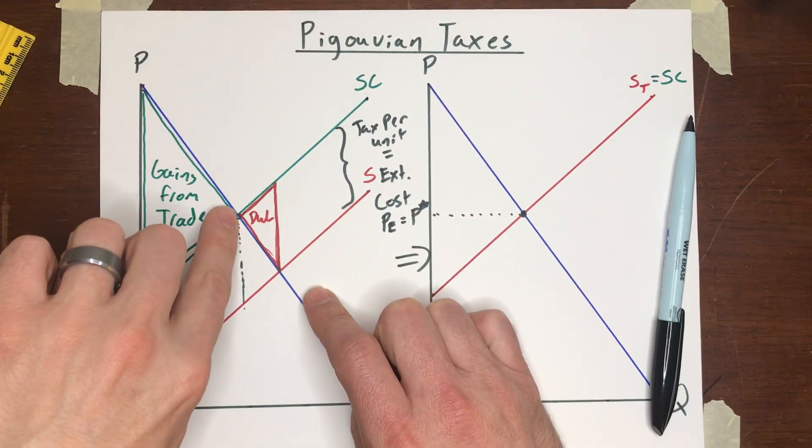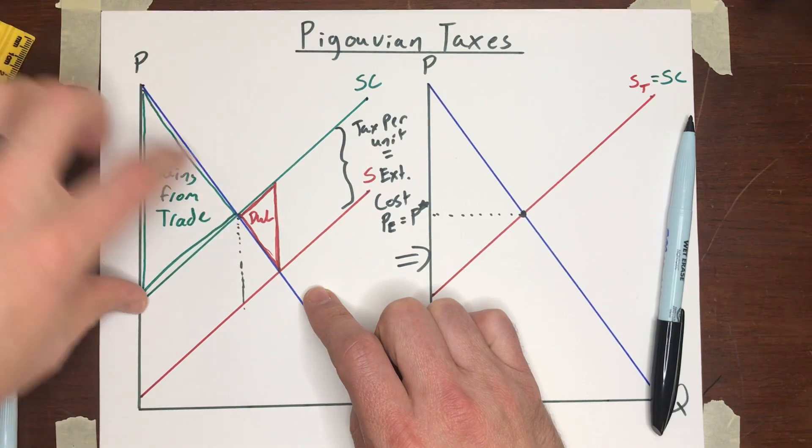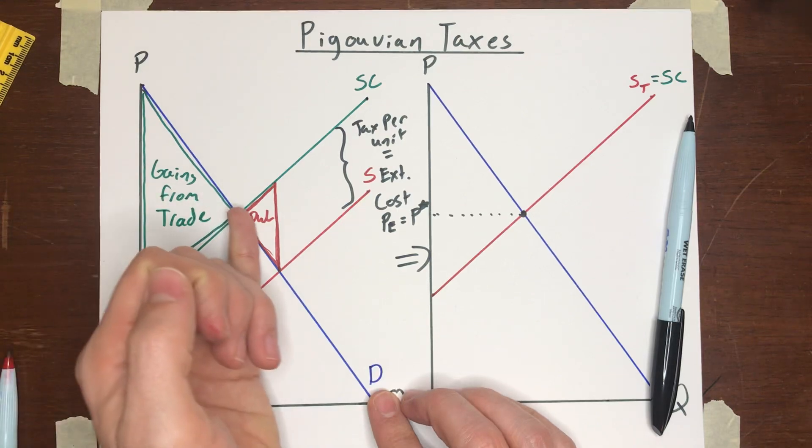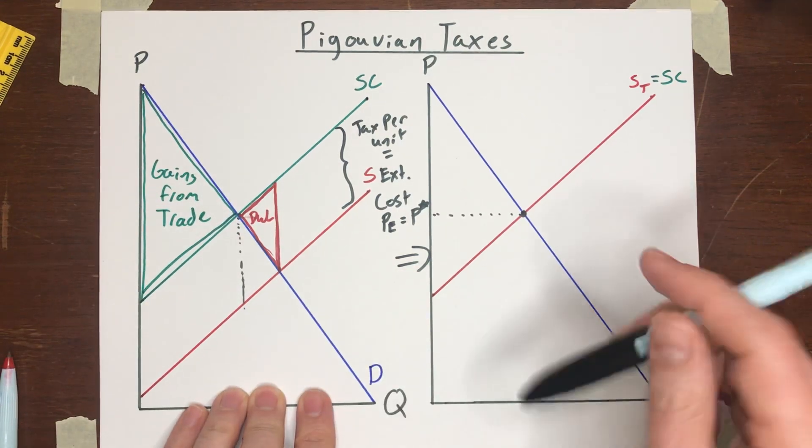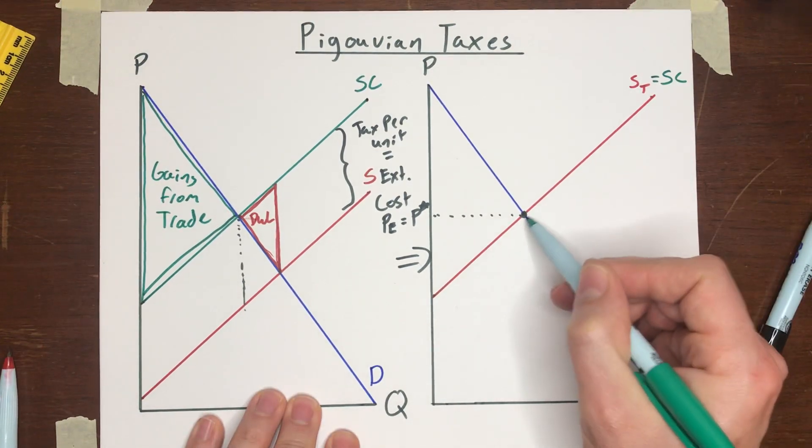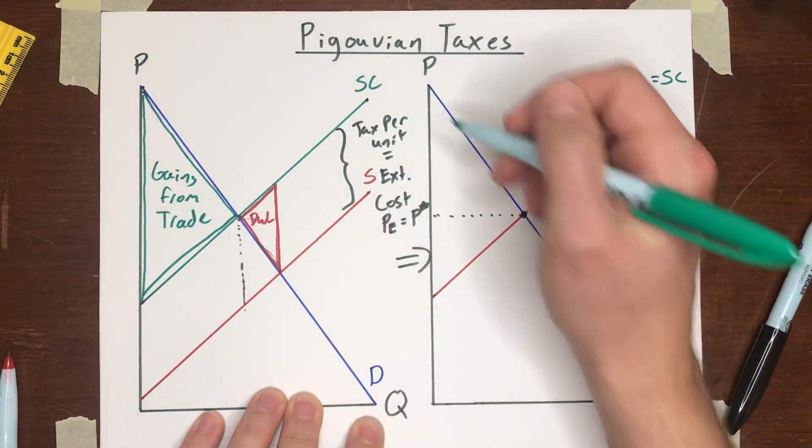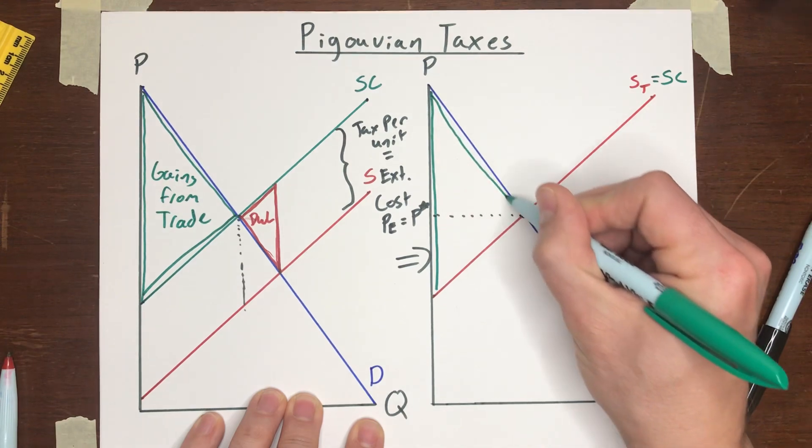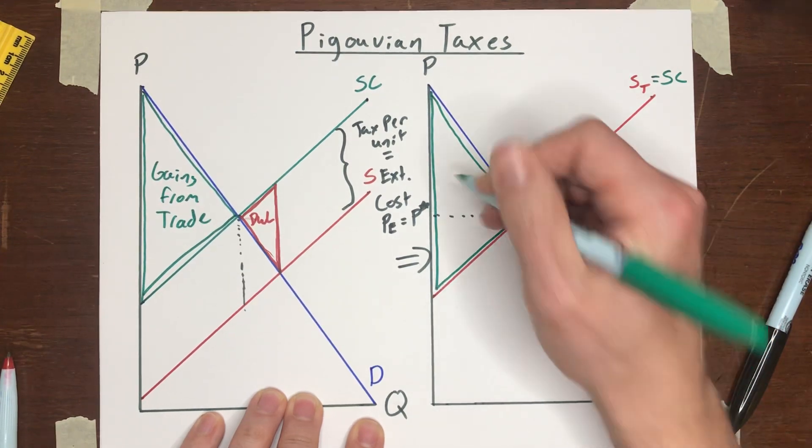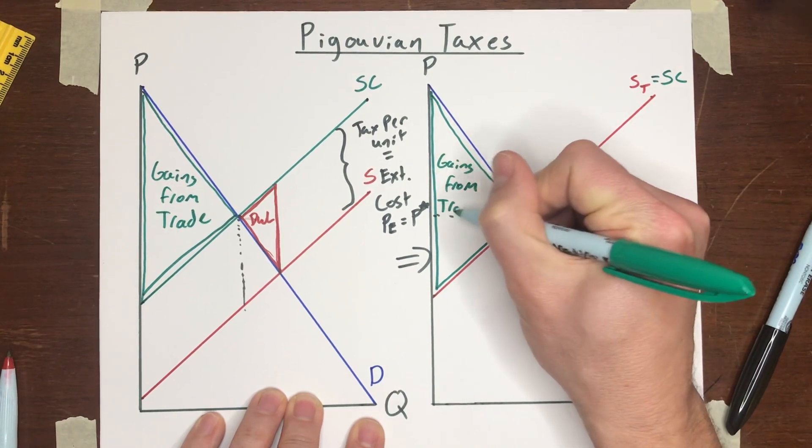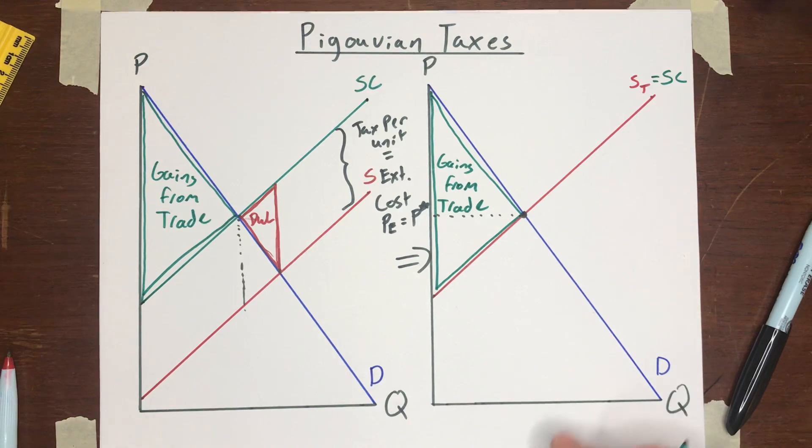Once you've reached this point, you've captured all the gains from trade and you haven't had any deadweight loss yet. But as soon as you start producing those extra units, you start getting this deadweight loss over here. Where we've imposed the tax, the equilibrium price and quantity are the same as the socially optimal price and quantity. So we get those gains from trade with no deadweight loss offsetting that to the right.